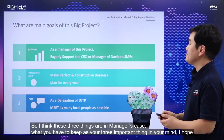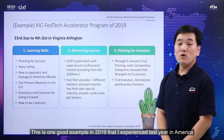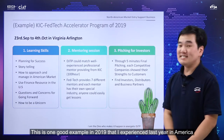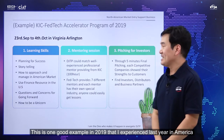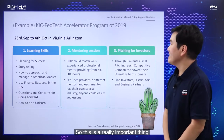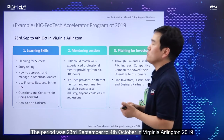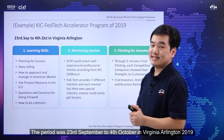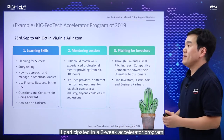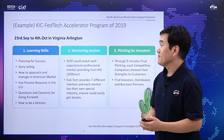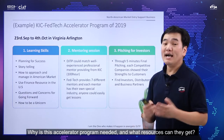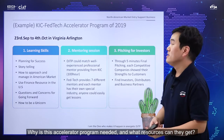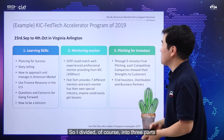Here is one good example from 2019. I experienced this last year in America. The period was September 23rd to October 4th, in Arlington, Virginia, 2019. I participated in a two-week accelerator program. Why is this accelerator program needed, and what resources can companies get? I divided it into three parts.